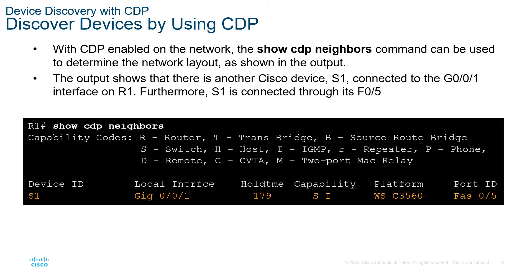With CDP enabled, you can use 'show cdp neighbors' to determine the network layout. For example, on R1 we issued 'show cdp neighbors' and on interface G0/0/1 the connected device is a switch — capability indicates it's a switch, platform is WS-C3560, connected via FastEthernet 0/5.